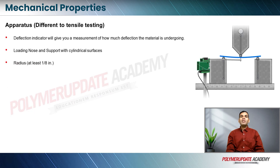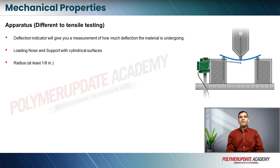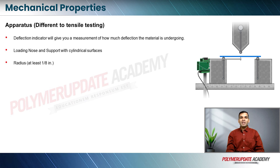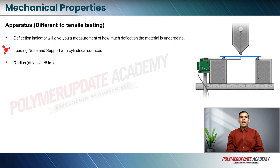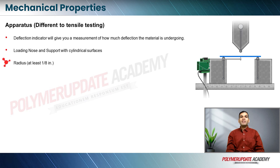How is the UTM apparatus different for the flexural test compared to the tensile test? It primarily comprises a deflection indicator instead of an extensometer. The deflection indicator gives a measure of how much deflection the material is undergoing. It also has a loading nose and supports on cylindrical surfaces, with a radius of at least 1/8 inch.